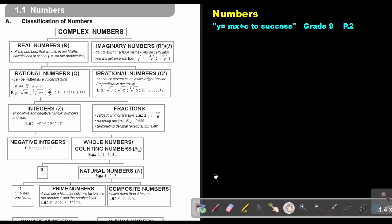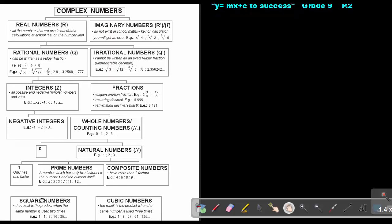Square numbers: the result is the product when the same number is used two times. So 1 squared is 1, 2 squared is 4, 3 squared is 9, and so on. Cubic numbers: the result in the product when the same number is used three times. So 1 to the power of 3 is 1, 2 to the power of 3 is 8, 3 to the power of 3 is 27, and so on.